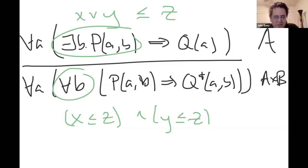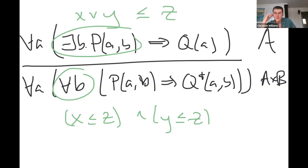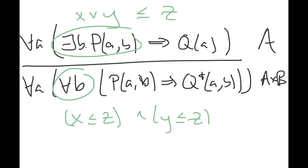I haven't seen this particular presentation of quantifiers as adjoints. The typical one involves, given a function, the pre-image on subsets of the sets. We're about to get to that. This is the special case where we're doing projection, and the quantification people do every day is usually in relation to this weakening. But then we have the further generalization that we can actually do it for any function.